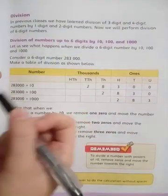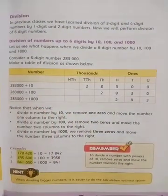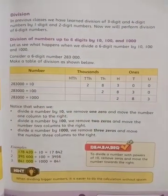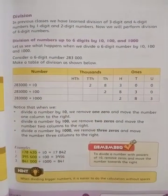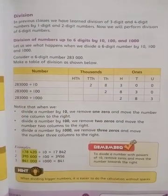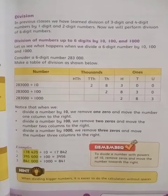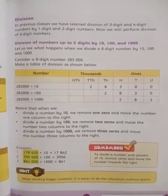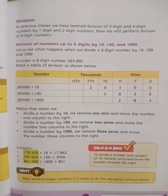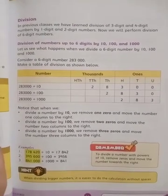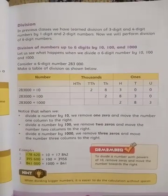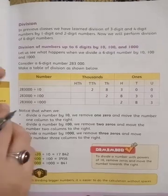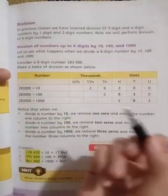Division کا basically مطلب کیا ہوتا ہے? Division کا مطلب ہوتا ہے کہ آپ نے اس چیز کو parts میں divide کر دینا، cut off کر دینا۔ کسی بھی چیز کو چھوٹے چھوٹے parts میں divide کر دینا - اس کو ہم کہتے ہیں divide کرنا۔ اس کا مطلب ہوتا ہے division۔